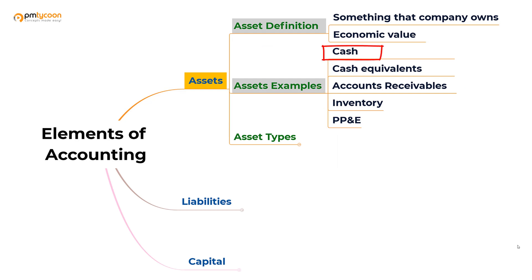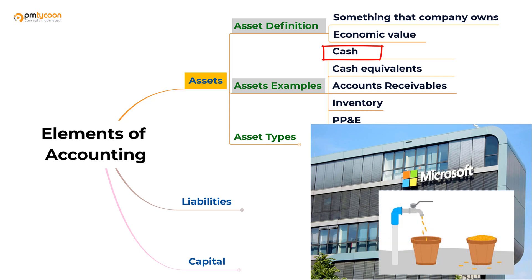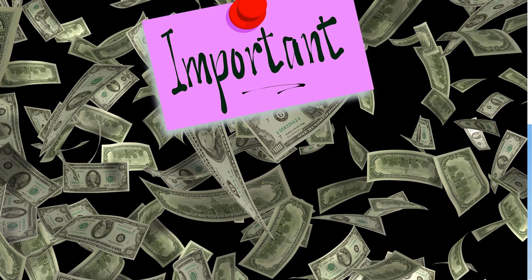Cash is the most important asset of an organization. It is important because it shows the liquidity position of a firm — how much cash does the firm hold in hand. If you have cash, it means the firm is in a good position to pay its vendors, its employees, and carry on with its operational activities without much issues.